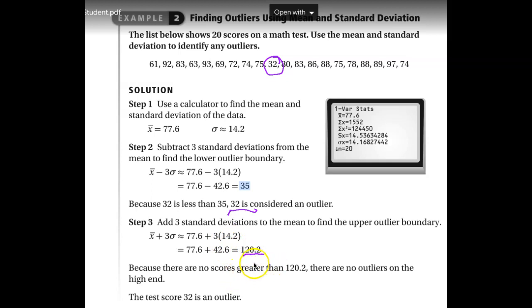If there are any data values above 120.2, they will also be outliers. But we don't have any of those, so there are no outliers at the high end. That means our only outlier is 32.